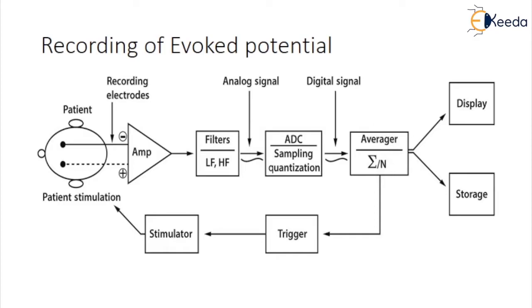Evoked potentials recorded at the surface of the brain is the integrated response of the action of many cells. The amplitude of the evoked potential is of the order of 10 microvolts.